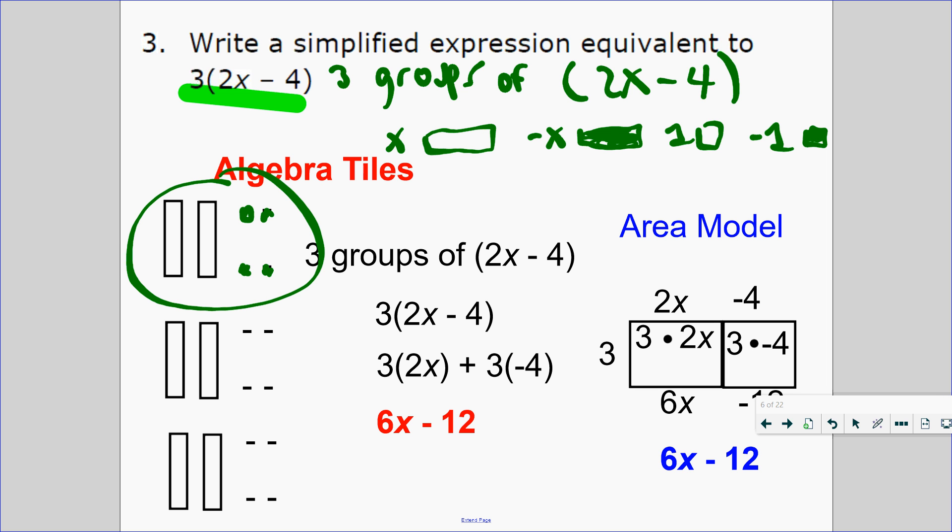But it says I need to draw three groups of it. Let me draw it again. Here's my first group, here's my second group, and here's my third group of 2x minus 4. Can you combine all the like terms? How many x's did I draw in all? I drew 6 x's. How many negatives did I draw in all? Negative 4, 8, negative 12. So 6x minus 12.